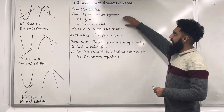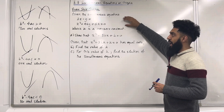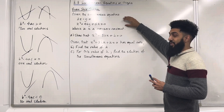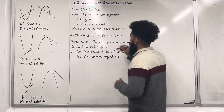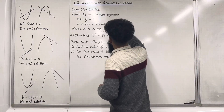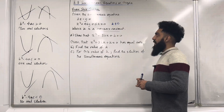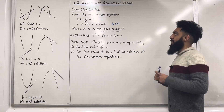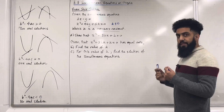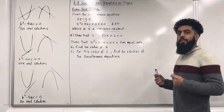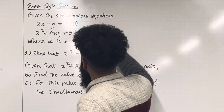Here is an exam-style question. Given the simultaneous equations: 2x minus y equals 1, and x squared plus 4ky plus 5k equals 0, where k is a non-zero constant (k is not equal to 0). Part A: show that x squared plus 8kx plus k is equal to 0. The very first step is to label your equations — equation 1 and equation 2.